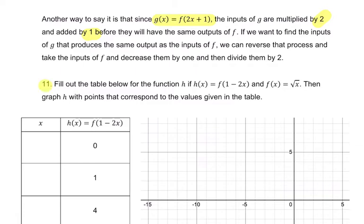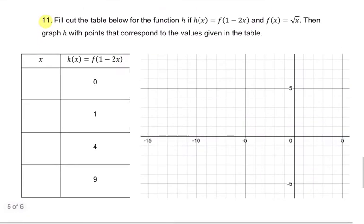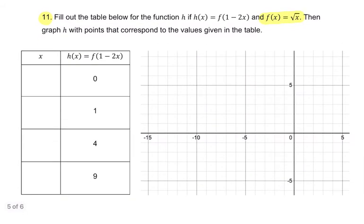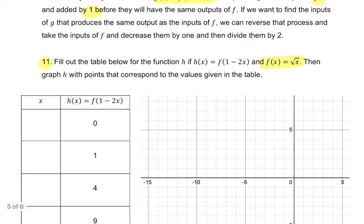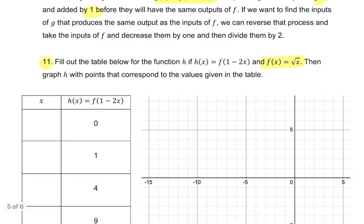And now we can look at 11 here. It says fill out the table below for this function h, if h of x equals f of 1 minus 2x, and f of x equals the square root of x. Then graph h with the points that correspond to the values given in the table. So here we want to know when does h of x equal 0, 1, 4, and 9. When does that happen?